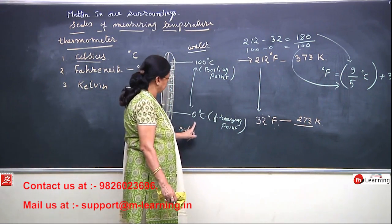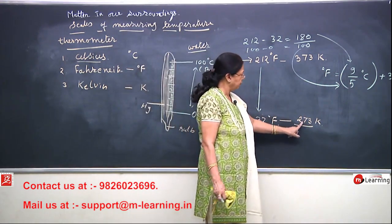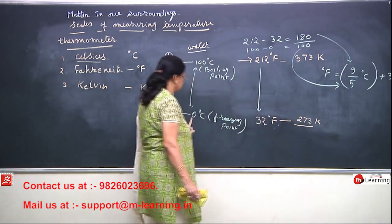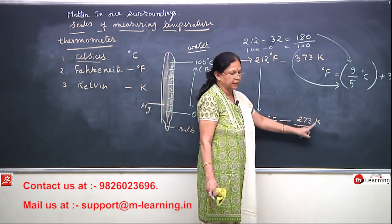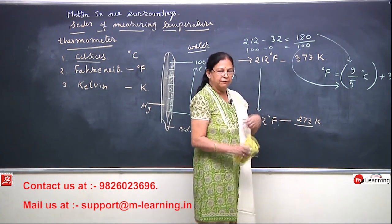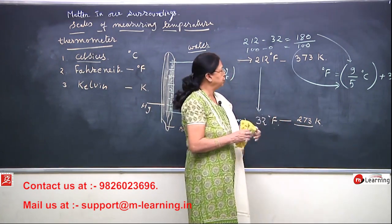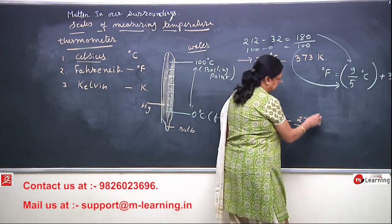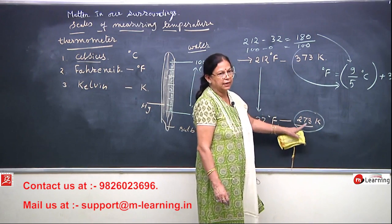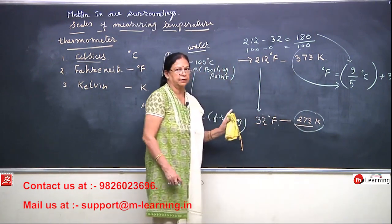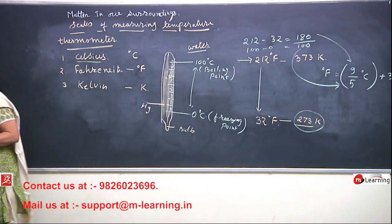Now if you want to change centigrade into Kelvin, 0 degree Celsius coincides with 273 Kelvin. So whatever temperature is given in Celsius, you add 273 to get the temperature in Kelvin. This is how the conversion is done. Thank you.